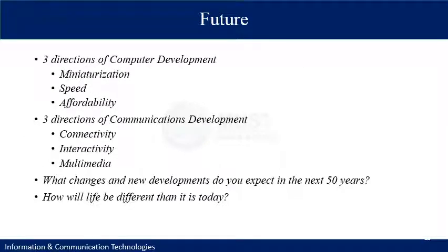In conclusion, we can summarize the development of computers in different directions. If we look at the development of computers, we can identify three dimensions in which progress is occurring. First, there has been a large development in size: early computers were quite large while current computers are small or even handheld. So the first direction is miniaturization — with time, computers are getting smaller and smaller.